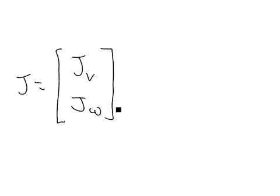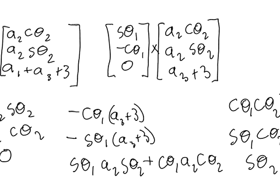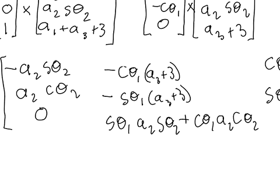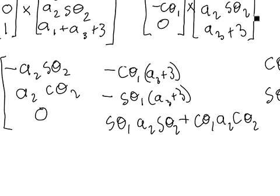We already calculated both of these parts. I'm just going to go back and get each one and stick them on top of each other. Here's the linear velocity part, the part we did most recently. I'm going to take that part and put it on the top of the Jacobian matrix.